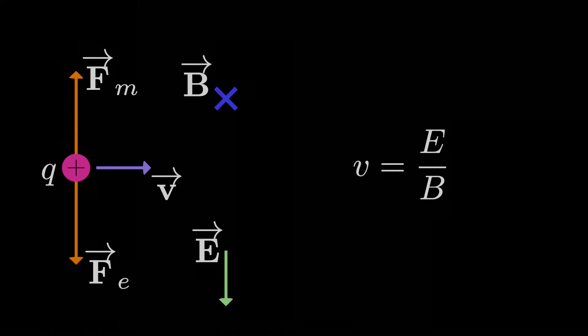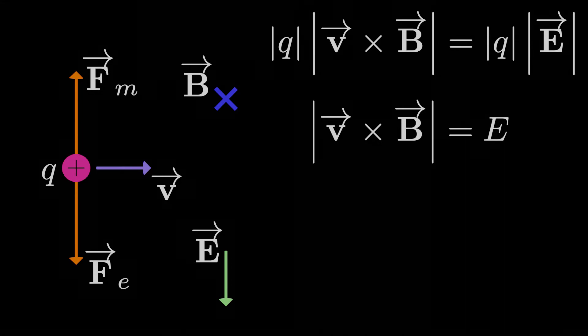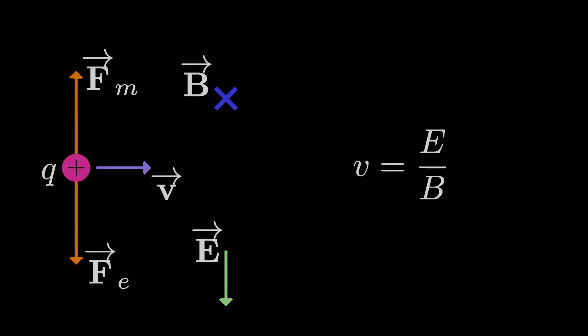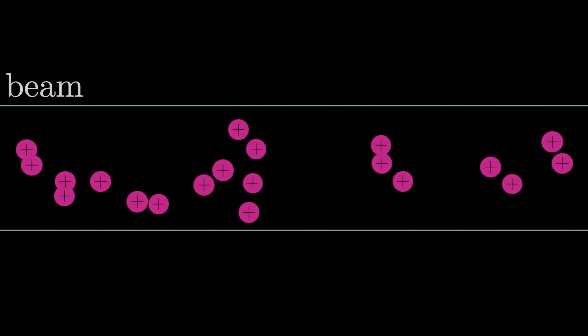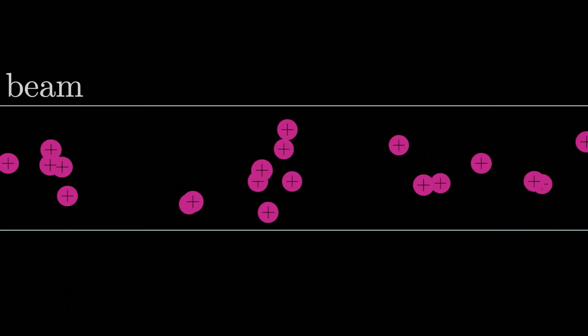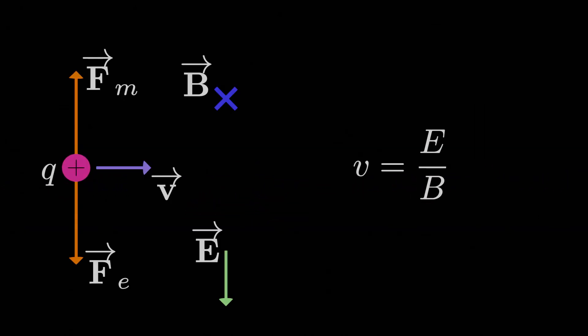It's remarkable how the speed doesn't depend on the charge of the particles at all. We were able to just divide out the charge and remove it from the analysis altogether. So it doesn't matter how small or how large the charge is, at least until we need to worry about interactions between the charges. The velocity we select only depends on the electric and magnetic field strengths.